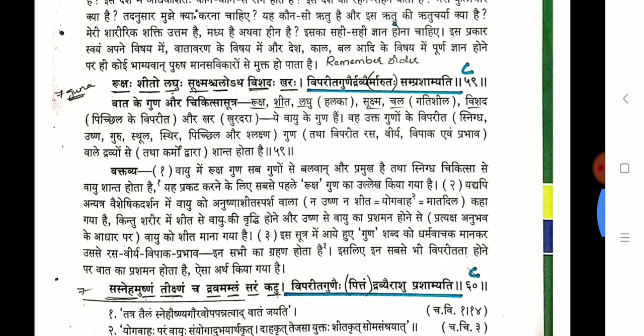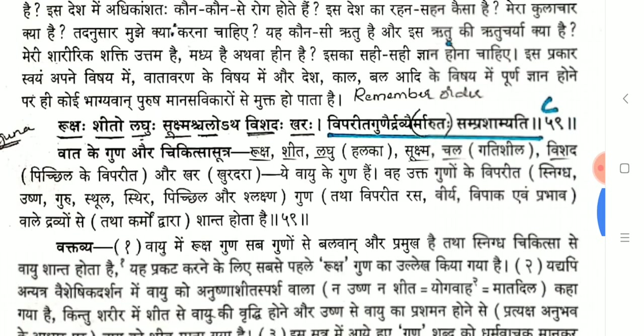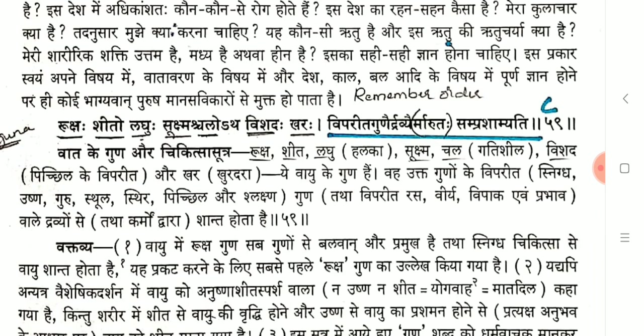This is an important and often neglected point in entrance preparation. Everyone focuses on Gunas of Vata, Pitta and Kapha, but it is important to remember names when the count is less than 10, and also the order. The seven qualities of Vata are: Ruksha, Shita, Laghu, Sukshma, Chala, Vishada, Khara.